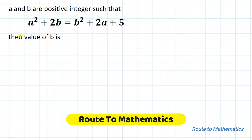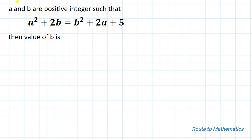Hello everyone, welcome to Root 2 Mathematics. In this video we're going to solve an interesting algebraic problem. The given question is: a and b are positive integers such that a² + 2ab = b² + 2a + 5. Then find the value of b.